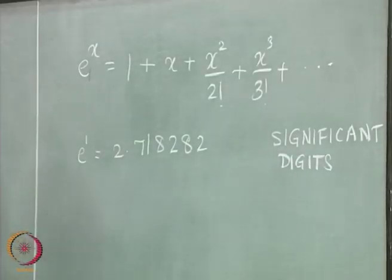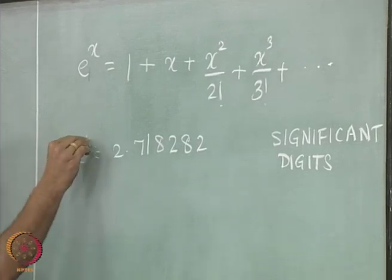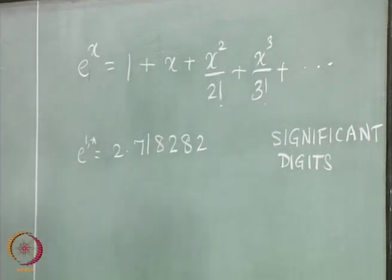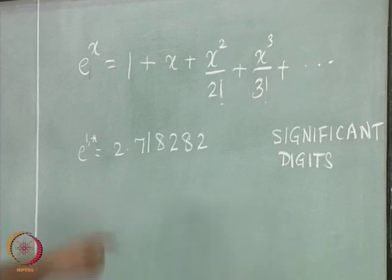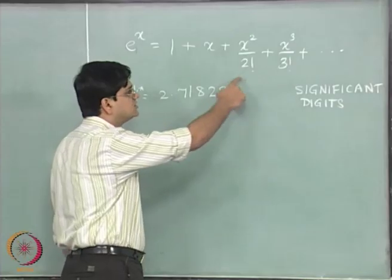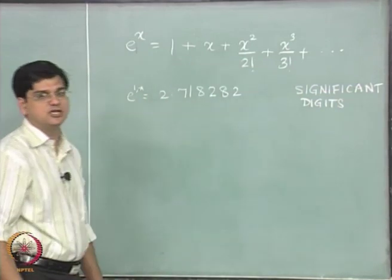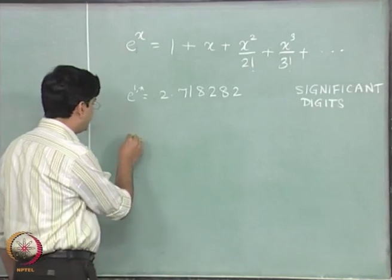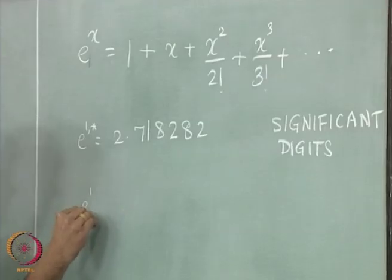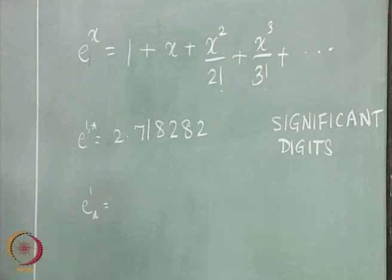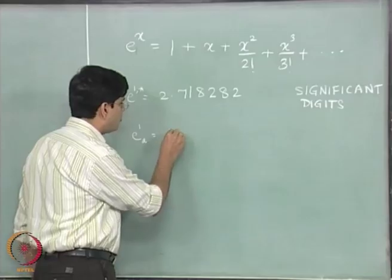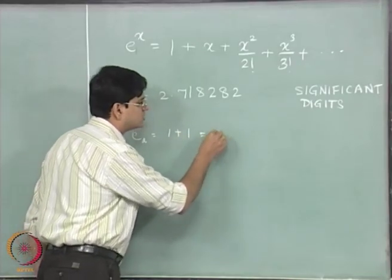I will try to get the approximate values of e to the power 1 by including additional terms in this infinite series. If we use only the first two terms of this infinite series, we will get e to the power 1 approximate. The subscript a stands for approximate is 1 plus 1 that is going to be equal to 2.